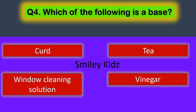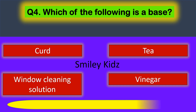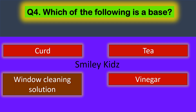Question number four: which of the following is a base? Your options are curd, tea, window cleaning solution, and vinegar. Your time starts now. The correct answer is window cleaning solution — window cleaning solution is a base.